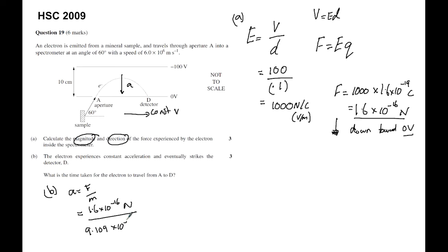Divided by the mass of the electron, which is 9.109 by 10 to the power of negative 31 kilogram, and we get a grand total in this case 1.759 by 10 to the power of 14 meters per second squared. So now we have the acceleration of my electron.